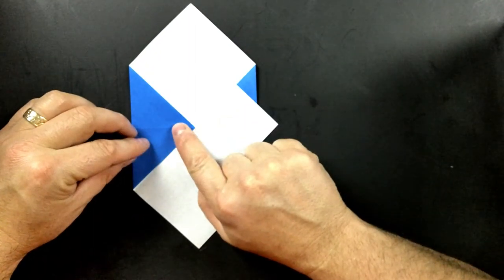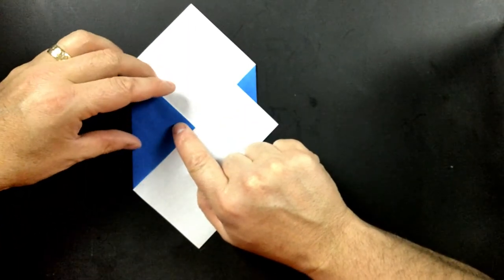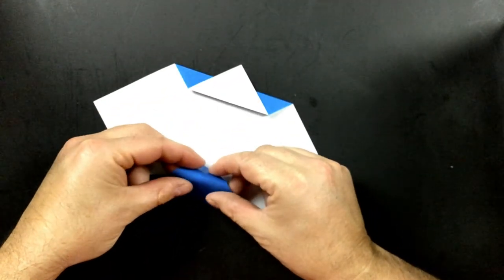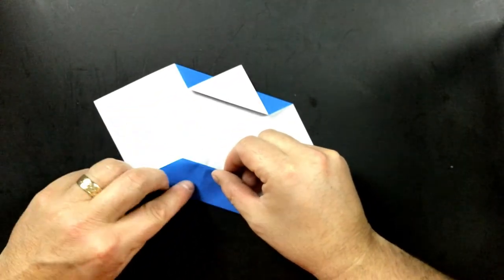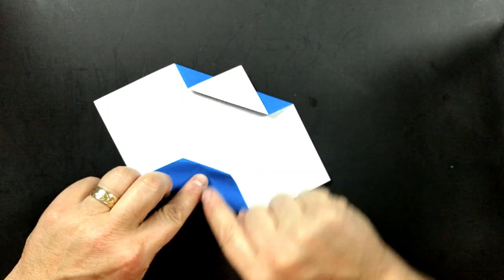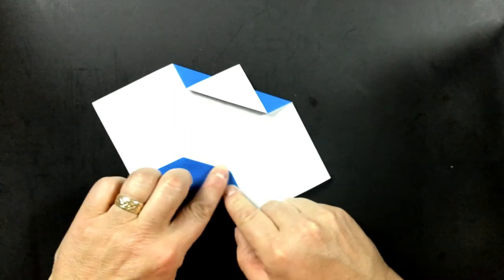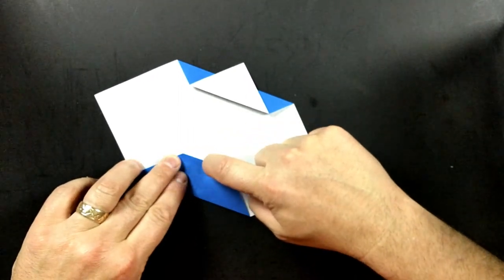This is going to be the chin of the dog after you have it created. So it's going to roll in slightly and make sure it's running right on that fold. And then the fold you're going to create is going to be parallel with the outside fold. Go ahead and crease that down.